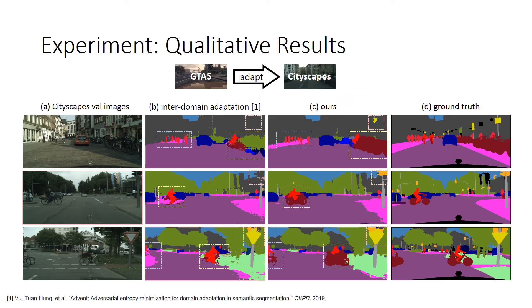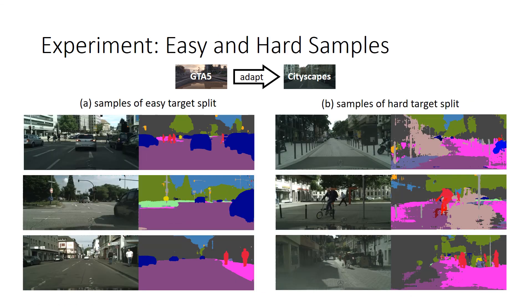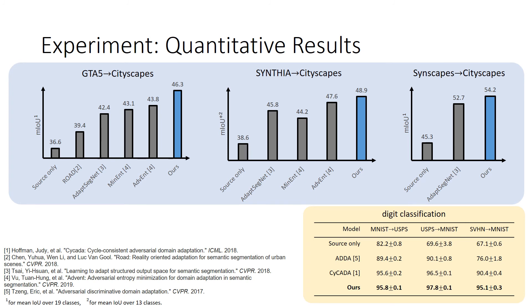We conducted the adaptation experiment from the GTA V to Cityscapes datasets. Qualitative results on the Cityscapes validation images show that our model utilizing both inter-domain and intra-domain adaptation outperforms the model using only inter-domain adaptation. We also provide visualization of samples from the easy and hard split with their segmentation predictions. Quantitative results on three benchmark datasets highlight the effectiveness of our model against existing state-of-the-art approaches. Further experiments on digit datasets show that our model can also be extended to the digit classification task.